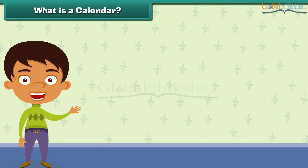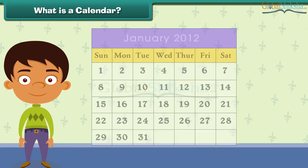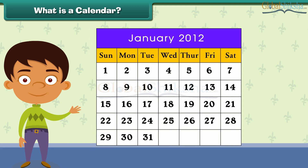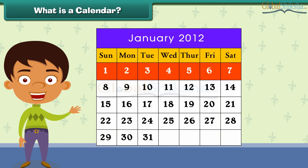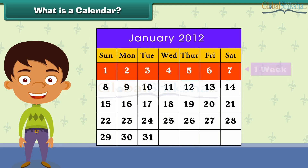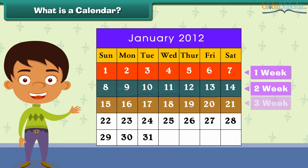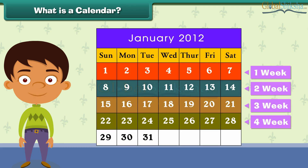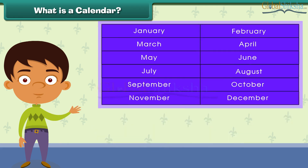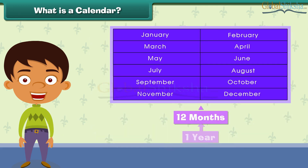What is a calendar? Look at this calendar. You see days written in some fashion. A calendar groups days into weeks, weeks into months, and months into a year. Each day is different.